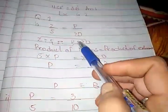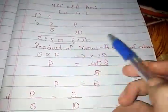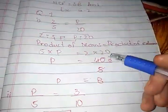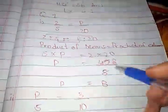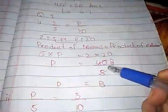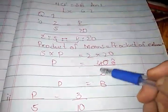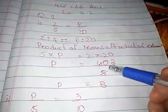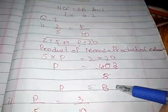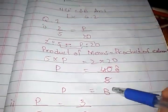Means are 5 multiplied by P and extremes are 2 multiplied by 20. 2 × 20 = 40. Since 5 cannot be multiplied by P, 40 is divided by 5. 5 eights are 40, so P's value is 8.